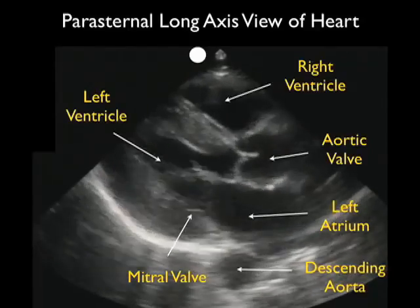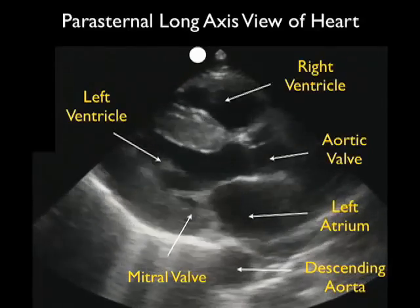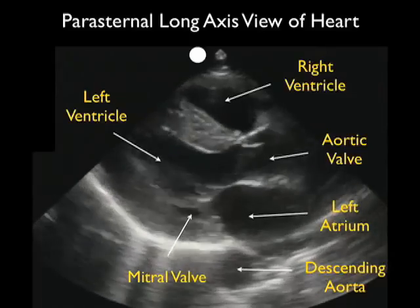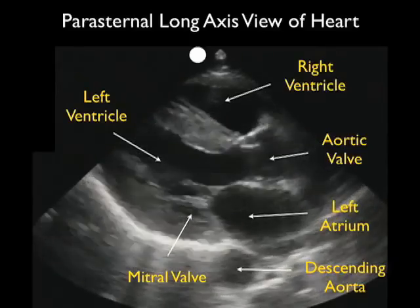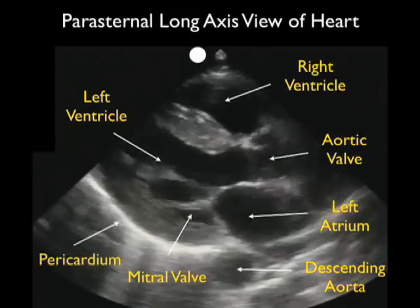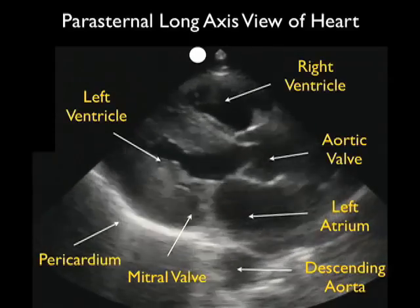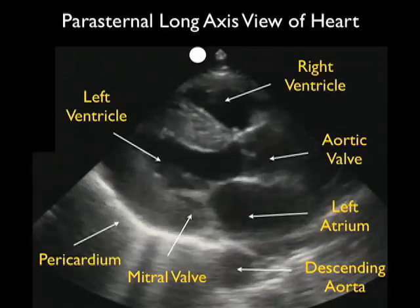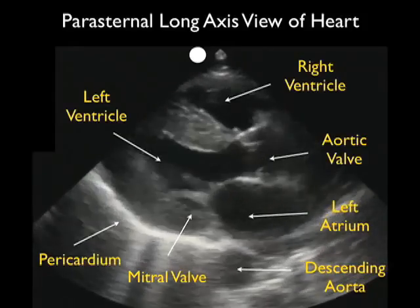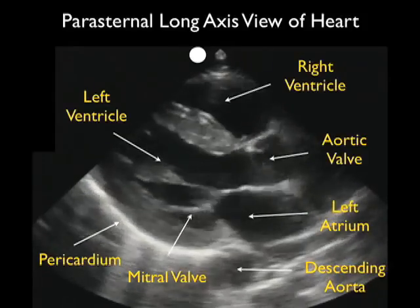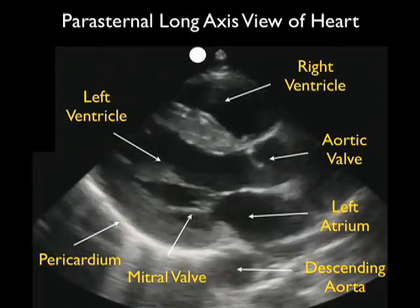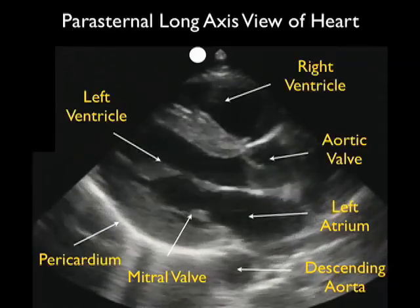Another very important structure to identify on bedside sonography is the descending aorta, which is a cylinder cut in cross section right below the mitral valve as seen in this image. This is a very important landmark because the posterior pericardial reflection — that white line seen posterior to the left ventricle — comes off anterior to the descending aorta. This allows us to tell if the fluid that we see there may be pericardial or pleural.